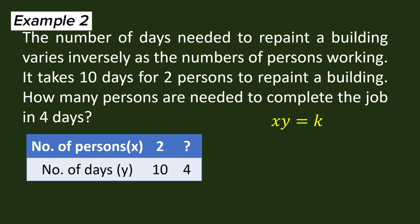So we have X equals 2 and Y equals 10. We substitute these values to the equation. 2 times 10 is 20. Now our K is 20. The new equation now is XY is equal to 20.